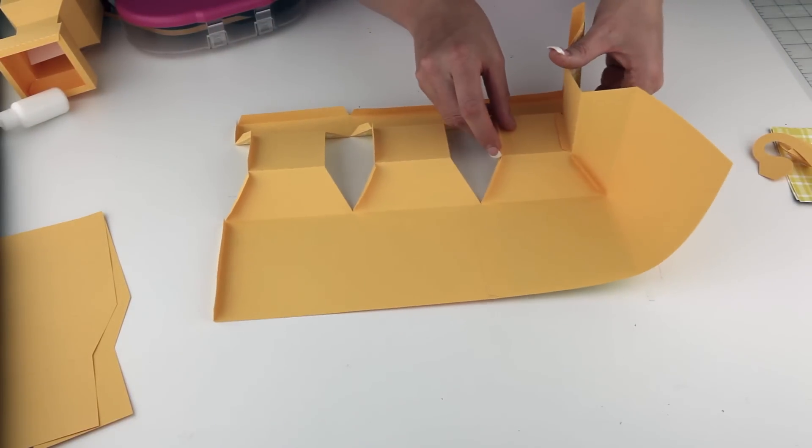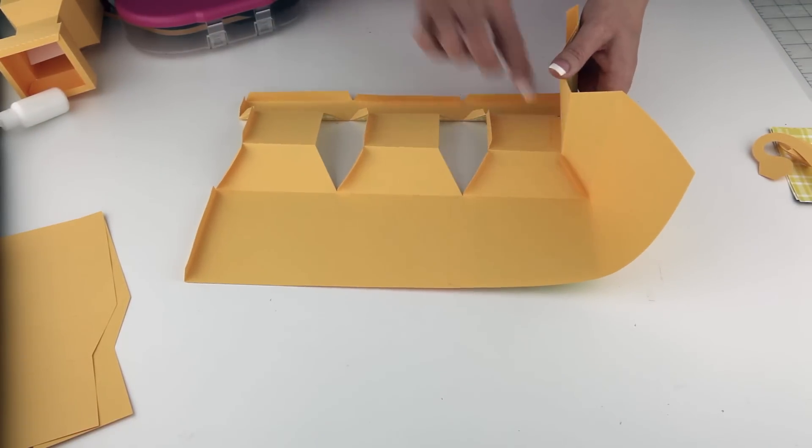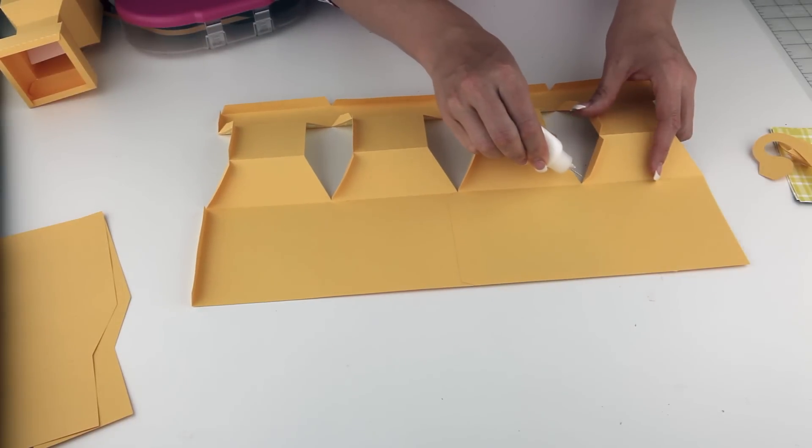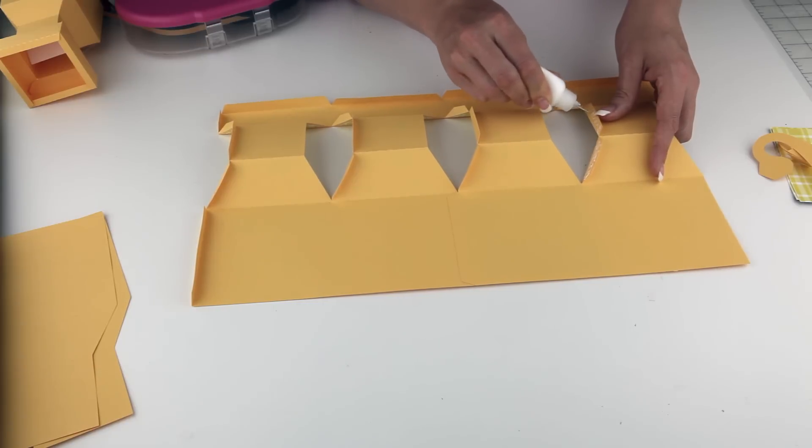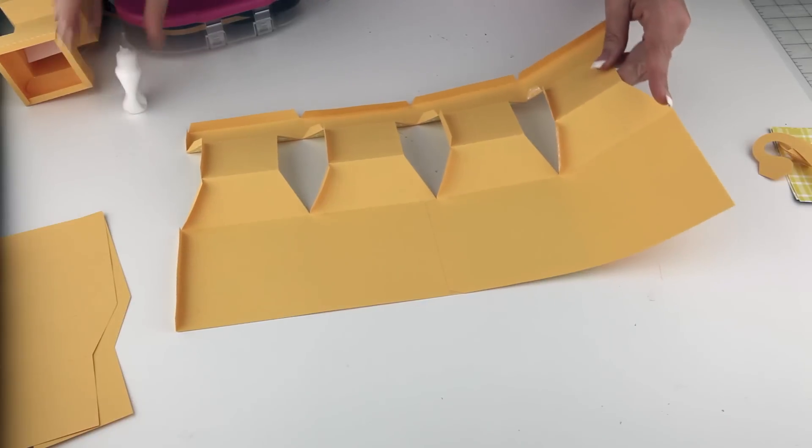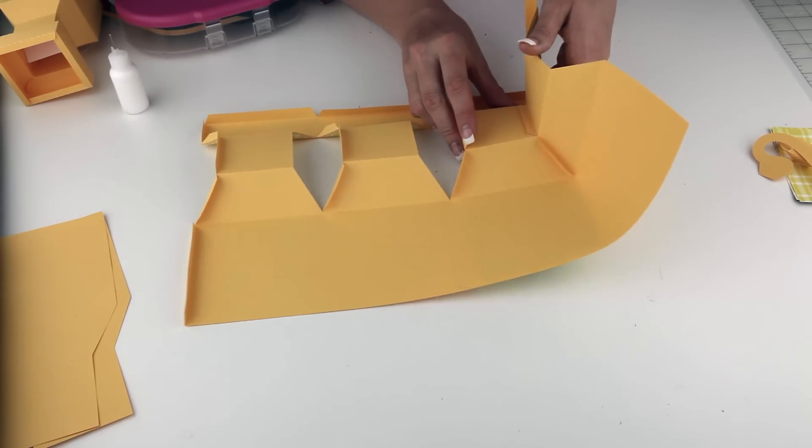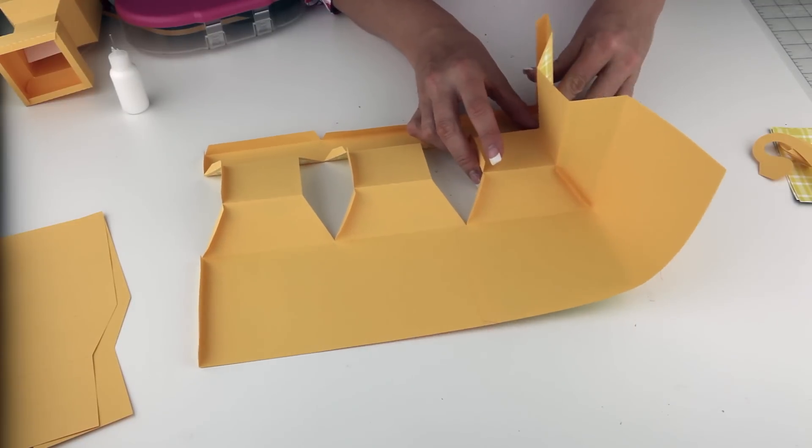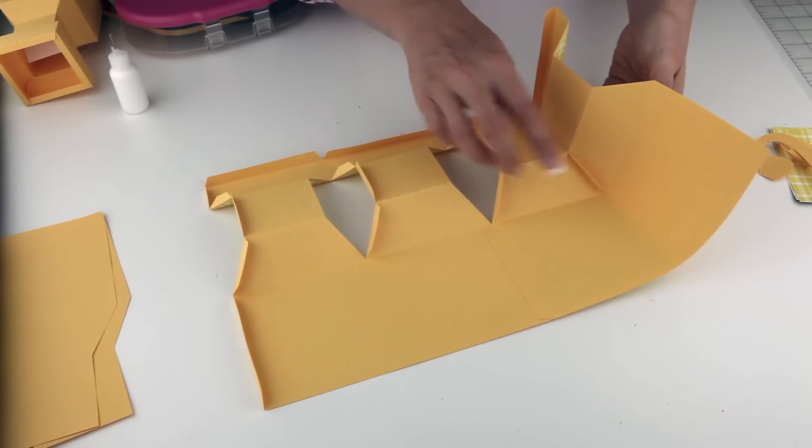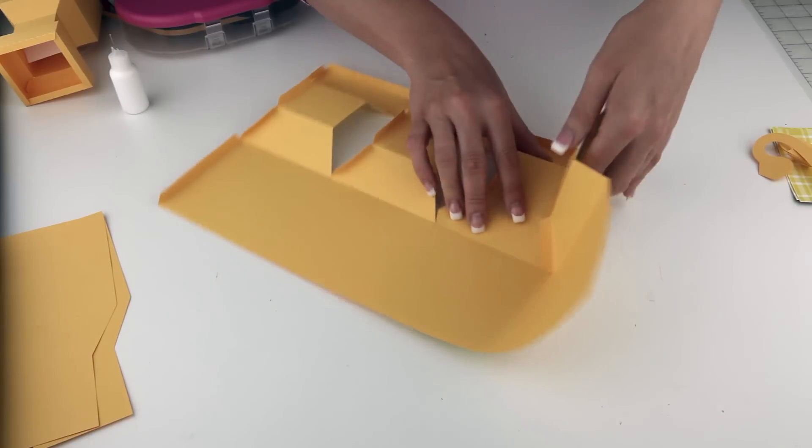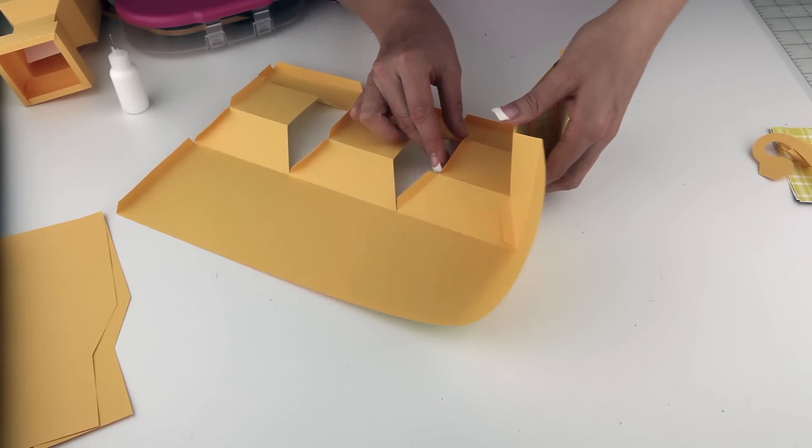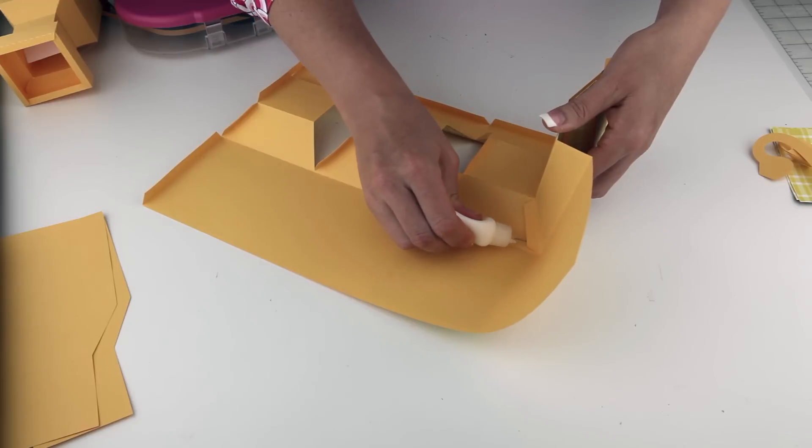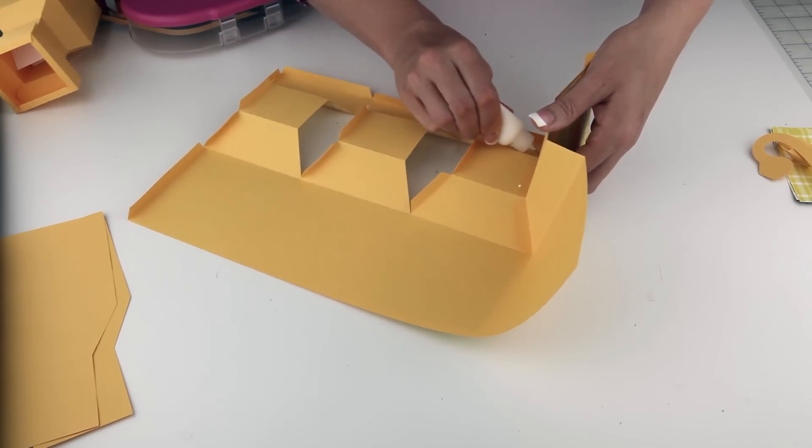You will notice there are some in between here that we need to fold. So now we are ready to start gluing it all together. We have to start folding these one section at a time and gluing them down. I am going to use some liquid glue because it is a little bit easier. This little tiny bottle with this long snout is so handy. Just fold that over and make sure it is nice and square and lined up.